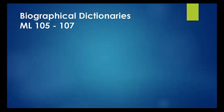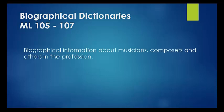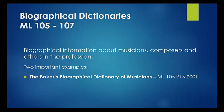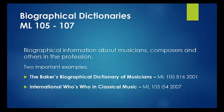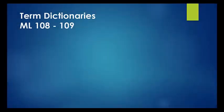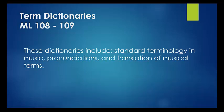Biographical dictionaries are classed in ML 105 through to ML 107 and provide biographical information about musicians, composers, and others in the profession. Two important works in this area are the Baker's Biographical Dictionary of Musicians, which includes biographies of classical, jazz, and popular performers in six print volumes, and the International Who's Who in Classical Music, which contains over 8,000 entries for living classical musicians. Term dictionaries are classed in ML 108 through to 109.